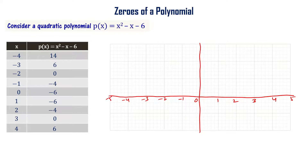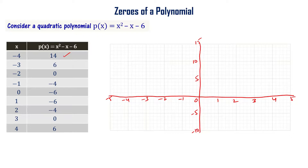On the vertical axis we have only 3 divisions but the maximum value is 14, so every unit represents 5. The scale markings are 5, 10, and 15 going up, and minus 5 and minus 10 going down.